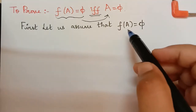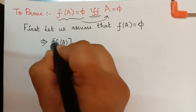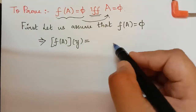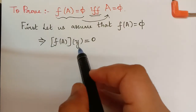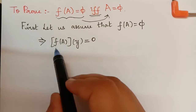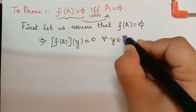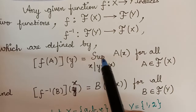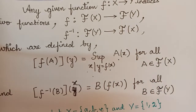We consider this for one particular value y. So f(A)(y) will be equal to 0, because f(A) = φ is a null set, and so the membership grade of y with respect to the fuzzy set f(A) is equal to 0 for all y an element of capital Y. Now by the extension principle, f(A)(y) equals the supremum of A(x) where x is such that y = f(x).